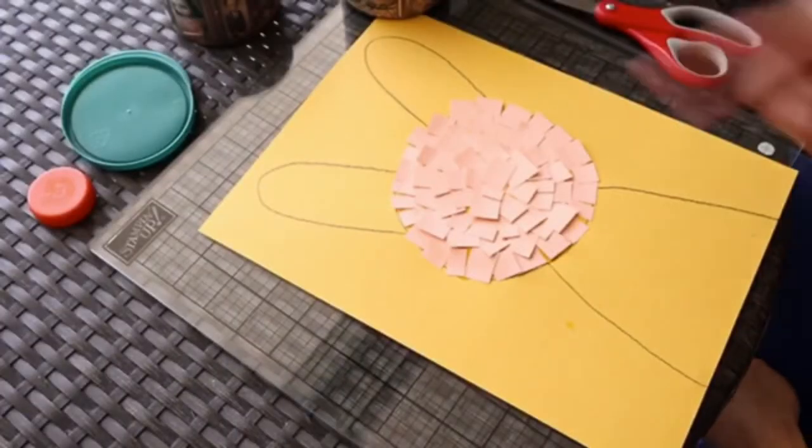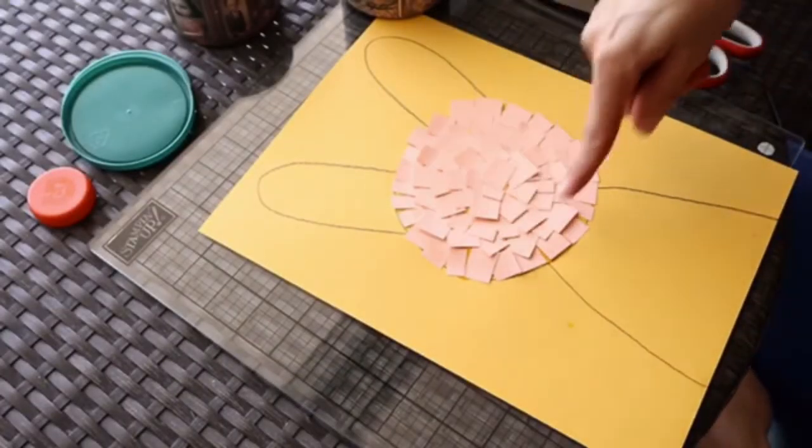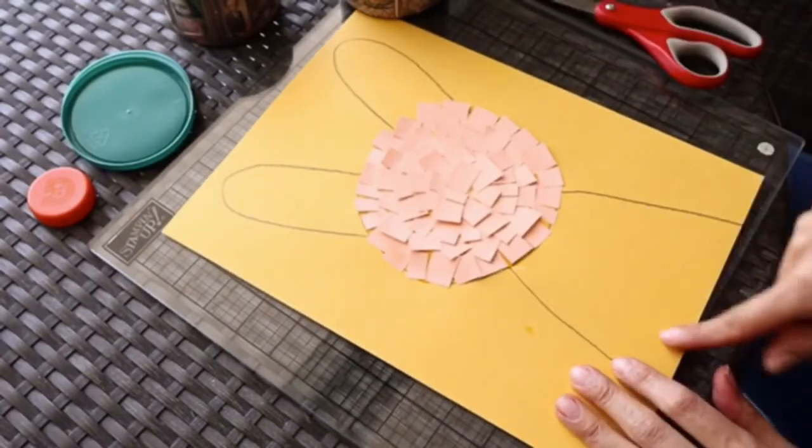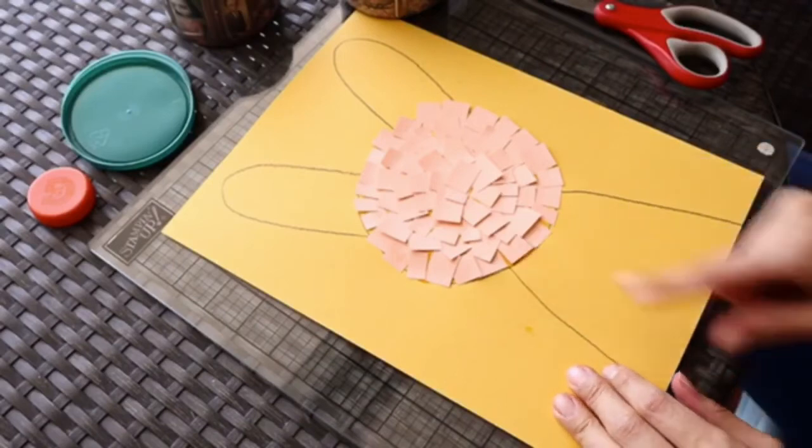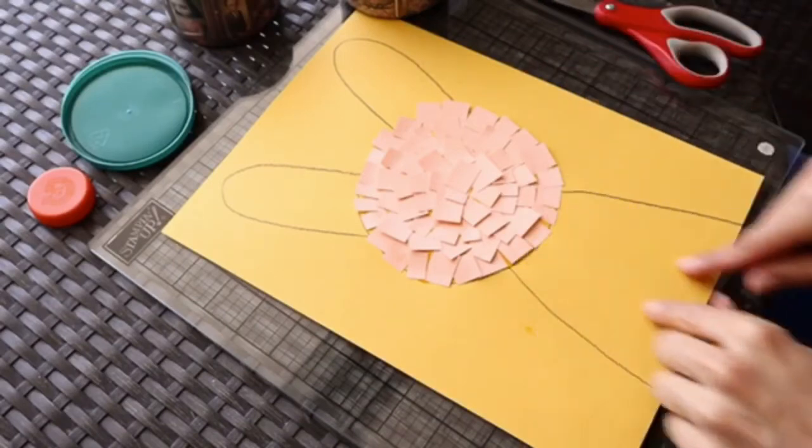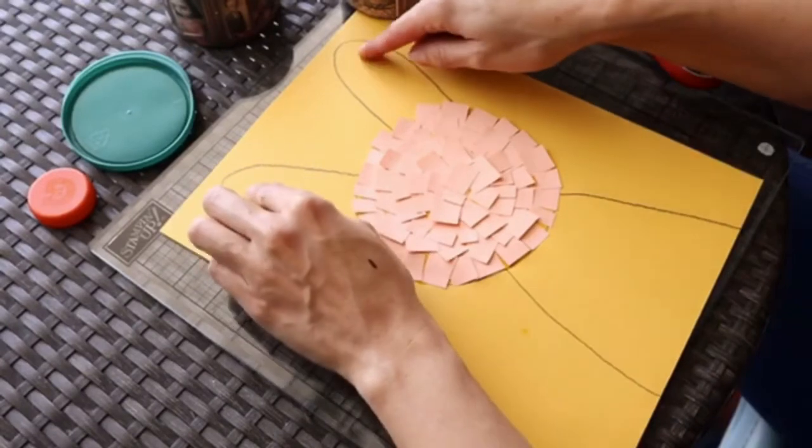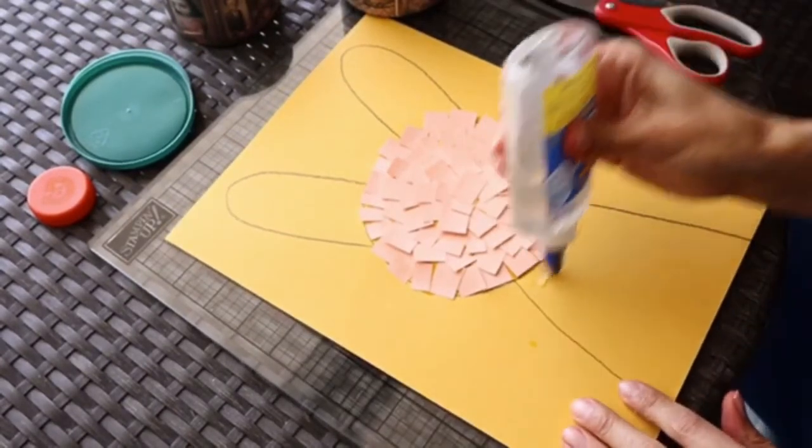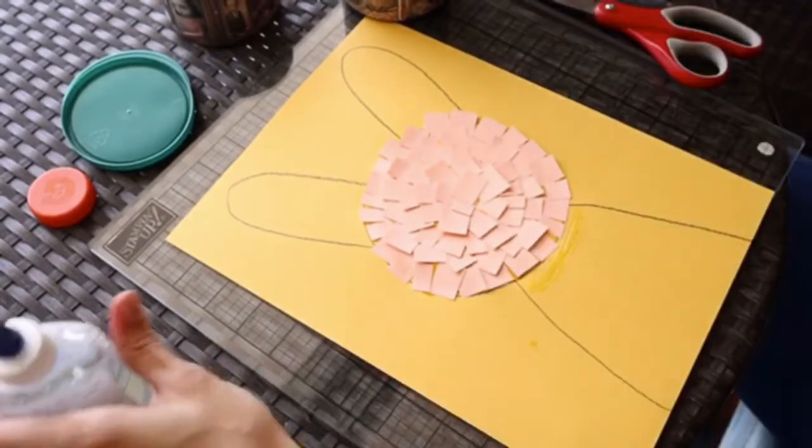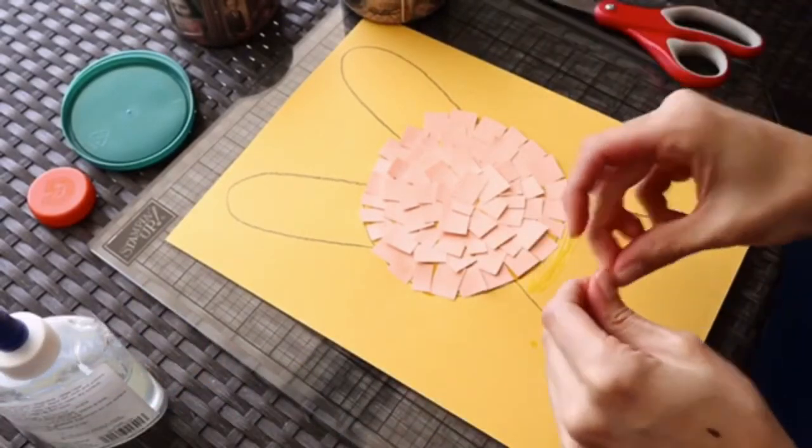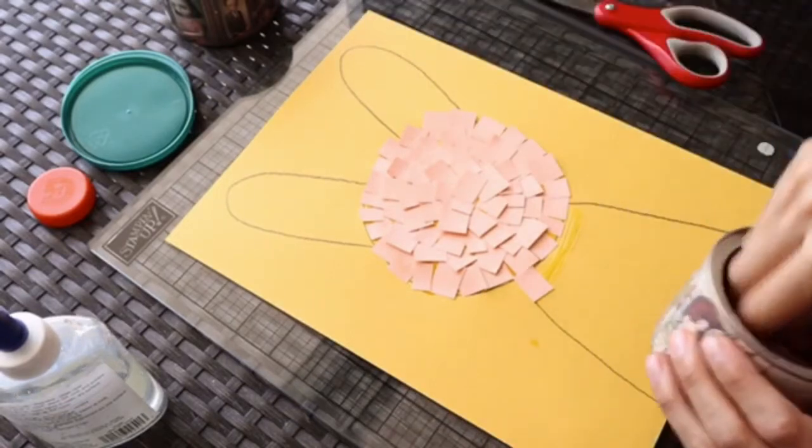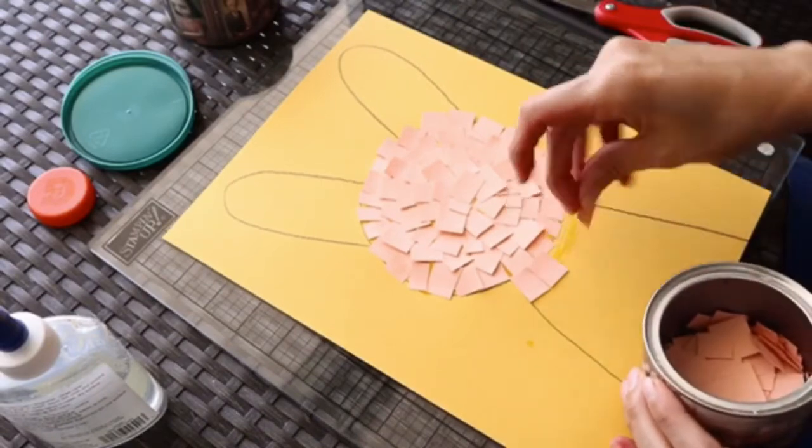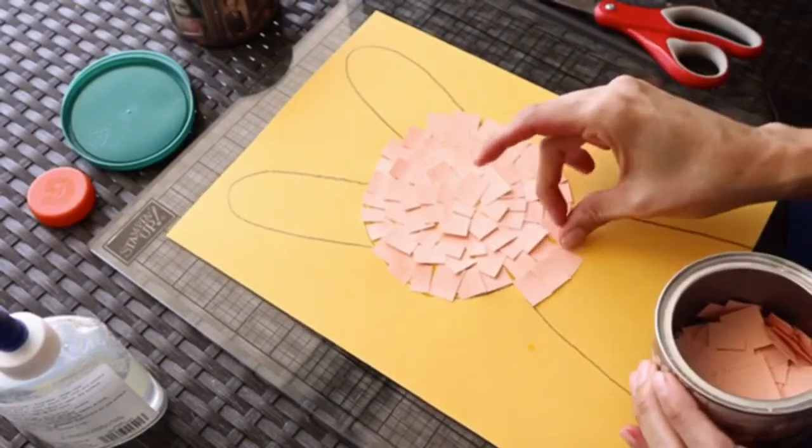To give it more like a furry look, since we already glued everything in a circular motion, what we're going to do is continue gluing the body. It doesn't matter, you can just make them more organized over here and the same thing with the ears. Remember to always put a little bit of glue, not everything at once, so that way your project is still clean and you will save glue and save time.